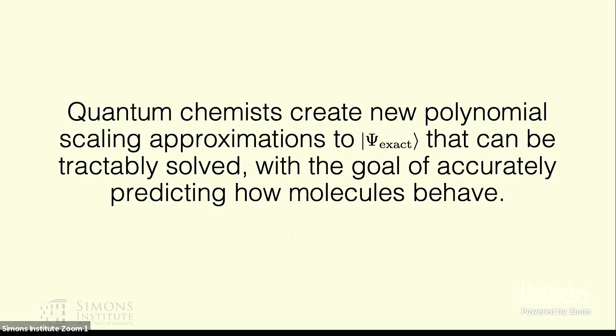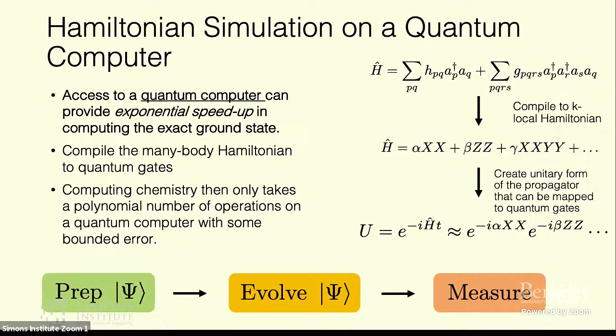In comes Hamiltonian simulation. If we had access to a quantum computer we'd be able to provide an exponential speedup in that simulation. Typically what people look at is computing the exact ground state energies, sometimes energy differences. This is just a super basic overview but we have some second quantized picture of the many-body system. Typically this is in the form of one body and two body operators and we can compile that down to some k-local Hamiltonian on a number of Pauli operators, and then with that create a unitary form of the propagator to evolve it in time. So we prep some approximate guess to the exact wave function, evolve it in time, and then measure some property, let's say usually the energy.